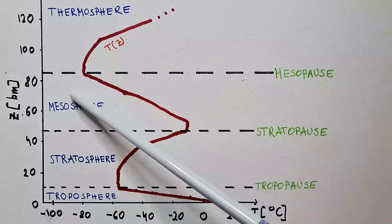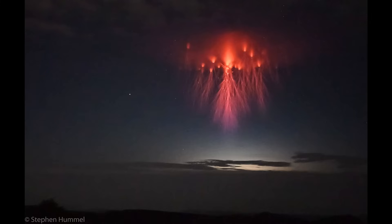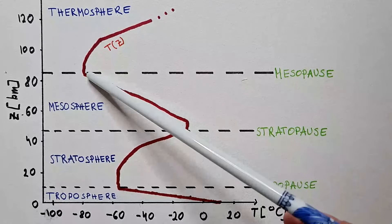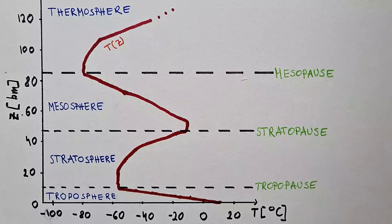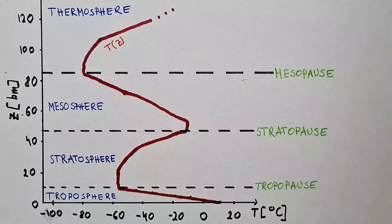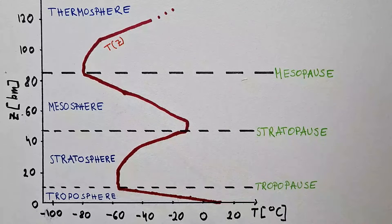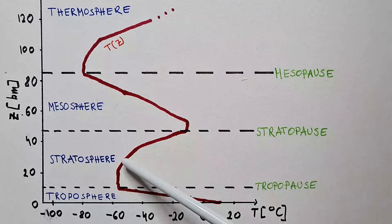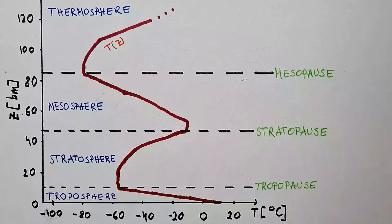Another beautiful phenomenon in the mesosphere is lightning sprites, as you can see on your screen. These form above thunderstorms — they are electrical phenomena not properly understood, but I will explain what we know about them in a separate video on atmospheric electricity. Temperature decreases with height in the mesosphere for two reasons: one, we are far from the surface so there is no surface to heat the atmosphere; and two, there are very few gas molecules to absorb solar radiation, in contrast to the stratosphere where ozone was absorbing UV light. Therefore, temperature is decreasing with height.